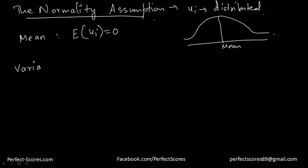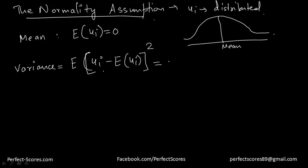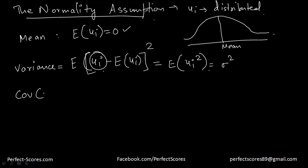What about the variance? The variance will actually be the expected value of ui minus the mean (which is the expected value of ui), squared — because that is what we do in variance. This will actually be equal to the expected value of ui squared, because we know the expected value of ui is zero. So the variance of the error term is actually supposed to be constant.